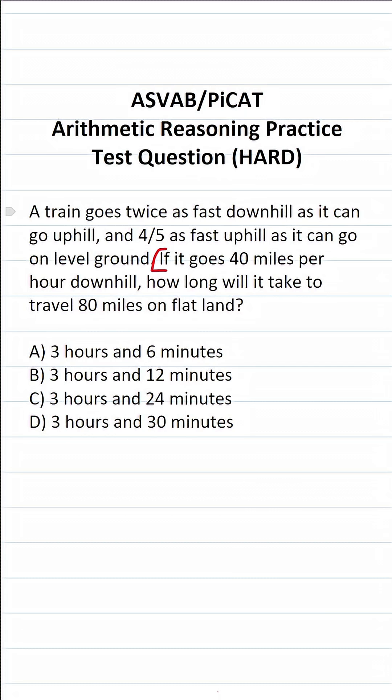This very last sentence tells us we're going to be using the distance formula to solve this one. That is, distance is equal to rate times time. We want to know how long it's going to take the train to travel a distance of 80 miles. So D is going to be 80 miles on flat land.